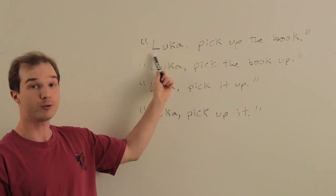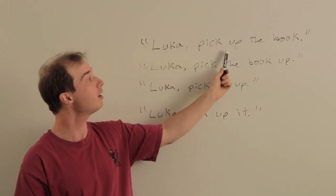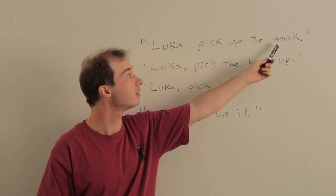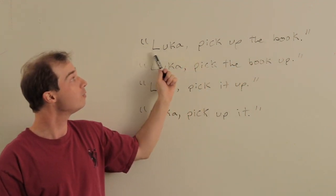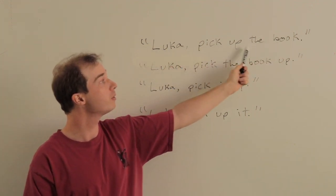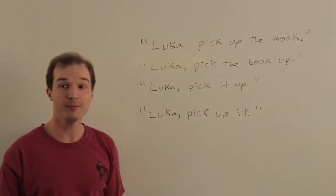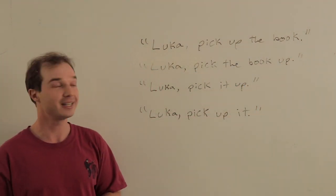We could, for example, form the sentence: 'Luca, pick up the book.' We have our subject, our verb, and our object — a very basic sentence in English.